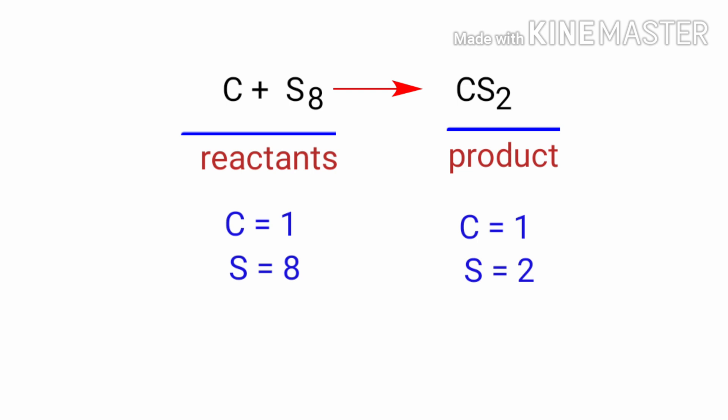The number of atoms are not balanced on both sides. To balance the chemical equation, we need to make use of coefficients. A coefficient is a number that we place in front of a chemical formula.